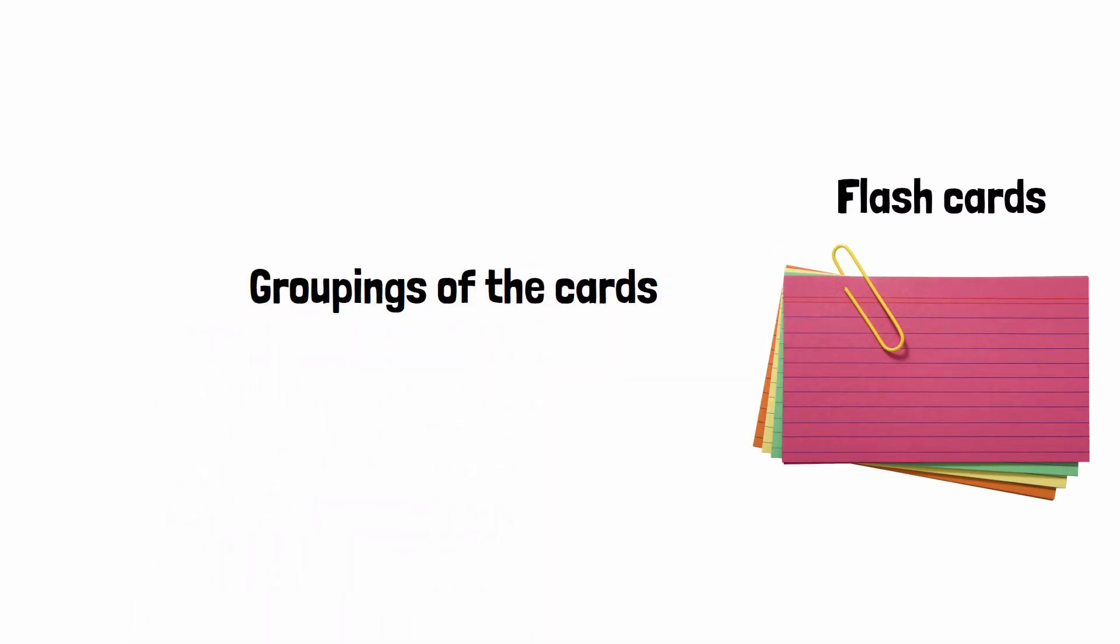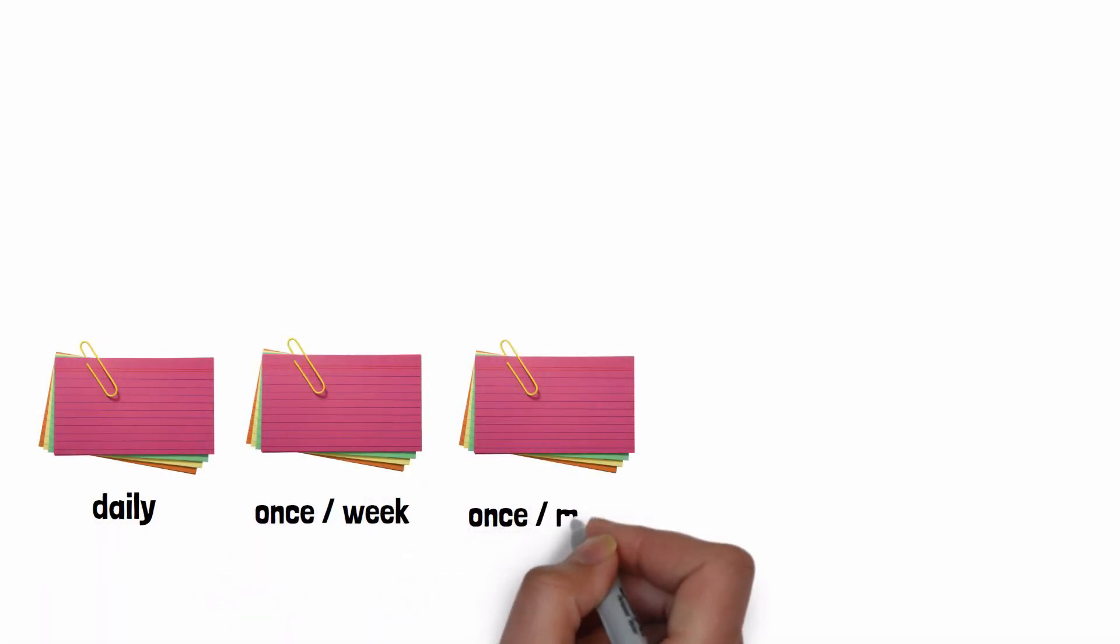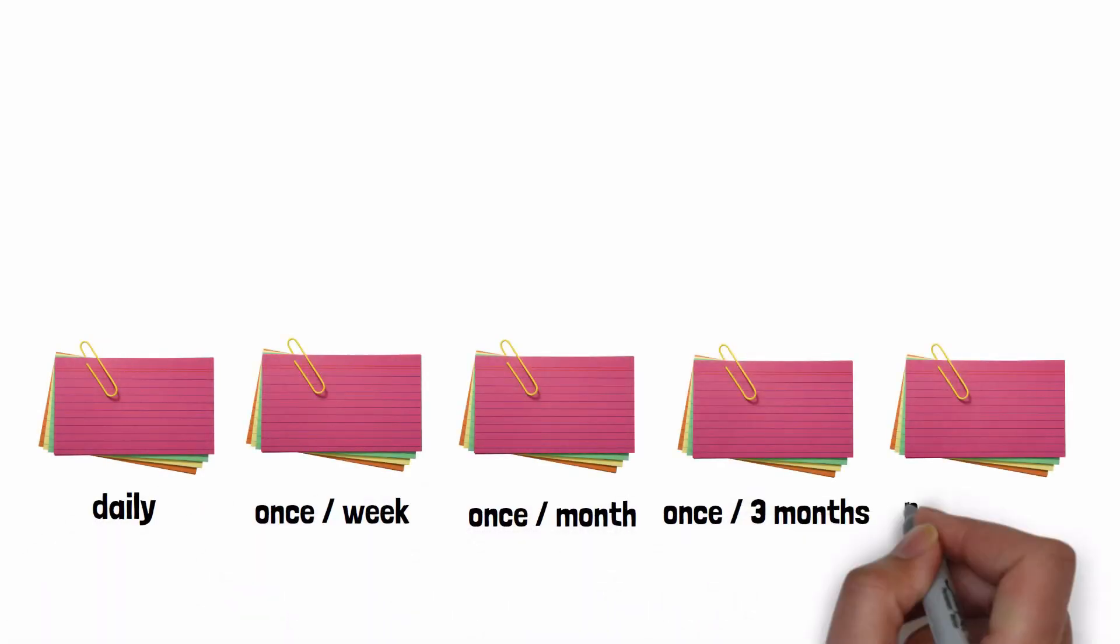The groupings of the cards will indicate how often you have to revise the material. For example, you can set the groupings as daily, once a week, once a month, once every three months, once every six months, and so on.